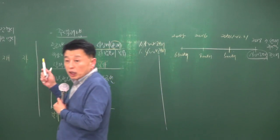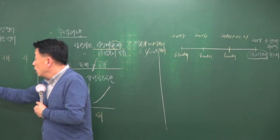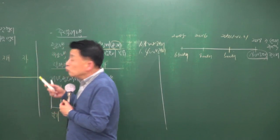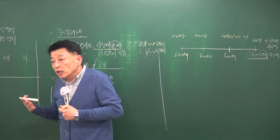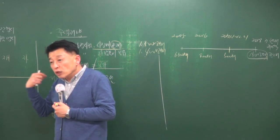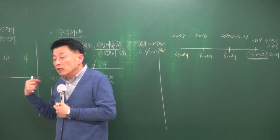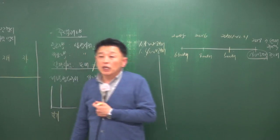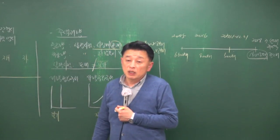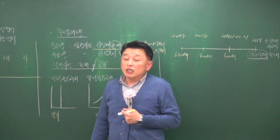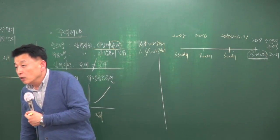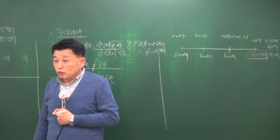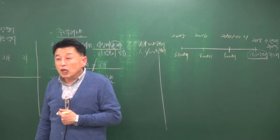유량과 저량에 대한 기본 정리는 필요하며, 저량 변수 세 가지를 기본으로 정리하시면 됩니다. 부동산에서는 저량이 중요하기 때문에 저량을 기준으로 답을 유도해 왔습니다. 유량 변수로는 지대, 순영업이익 등 기간이 명시되는 것들이 해당됩니다.